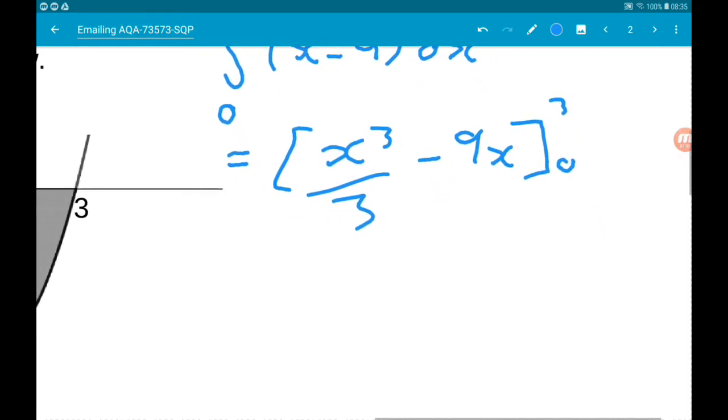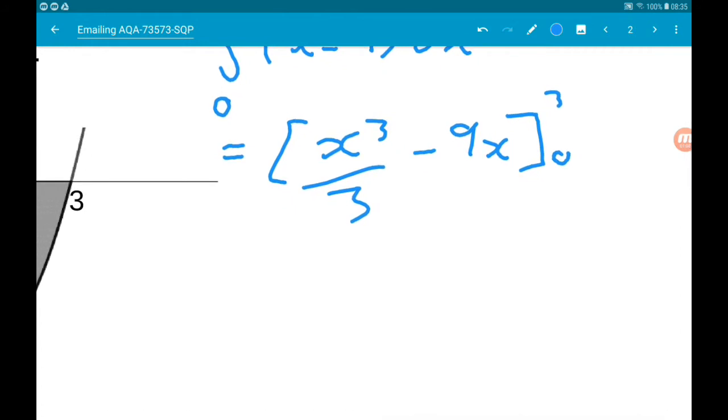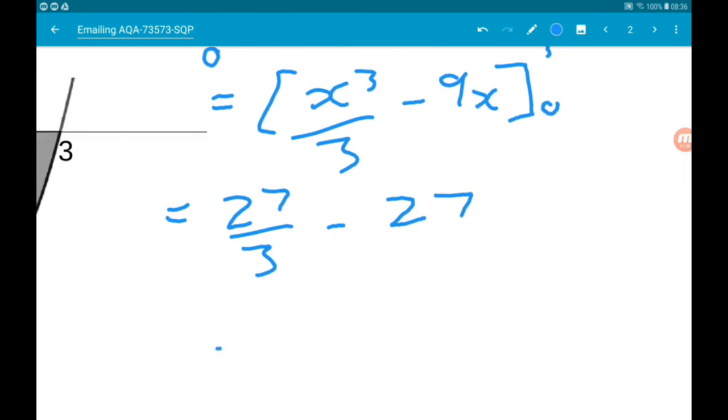When x is 3, x cubed over 3 is 27 over 3, minus 9 times 3 is 27. When x is 0, the two terms are just 0. So this gives us 9 minus 27.